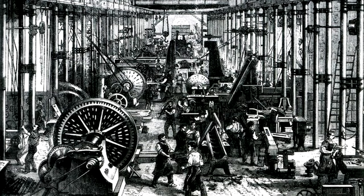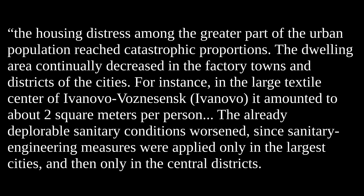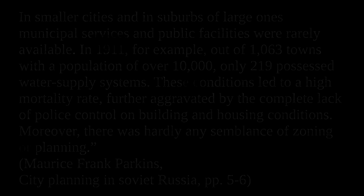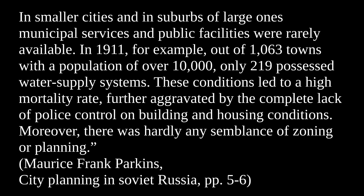With the development of capitalism in Russia in the late 1800s and early 1900s, as Maurice Frank Parkins writes, "the housing distress among the greater part of the urban population reached catastrophic proportions. The dwelling area continually decreased in the factory towns and districts of the cities. For instance, in the large textile center of Ivanovo-Vazhenshensk, the dwelling area amounted to about two square meters per person." The already deplorable sanitary conditions worsened, since sanitary engineering measures were applied only in the largest cities and then only in the central districts. Out of 1,000 towns with a population of over 10,000, only 200 possessed water supply systems.